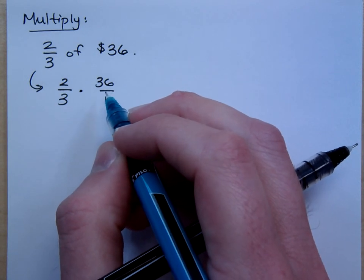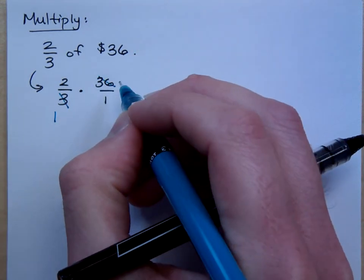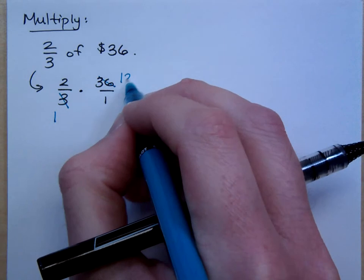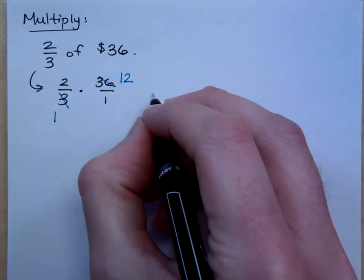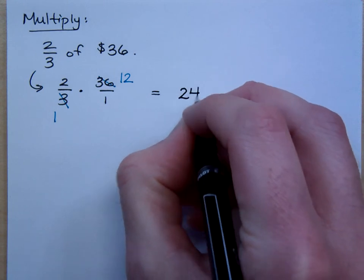3, and it is because 3 is a prime number. So 3 goes into 3 once, 3 goes into 36 how many times? What do we have left?